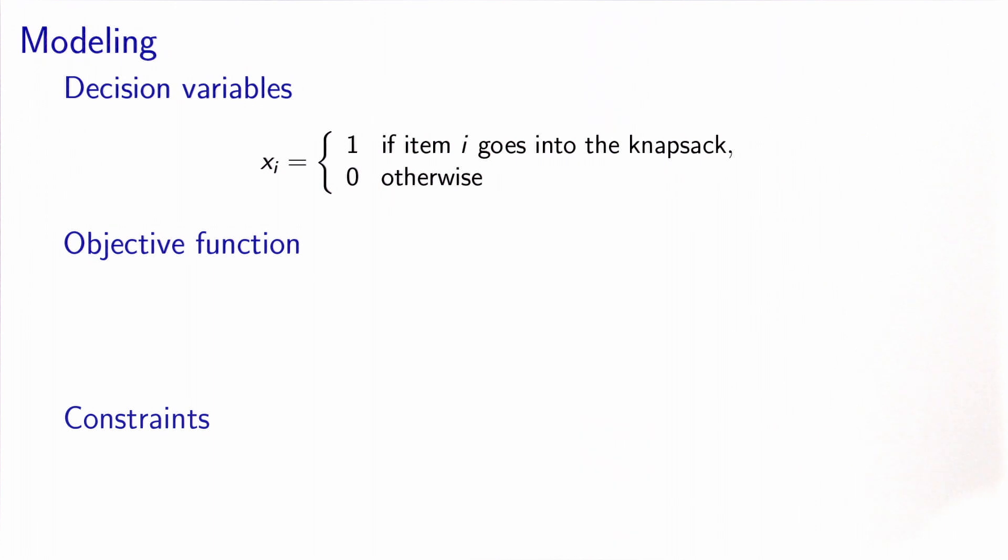Let's model this problem as an optimization problem. To do that, we need to do three things: identify the decision variables, identify the objective function, and identify the constraints.